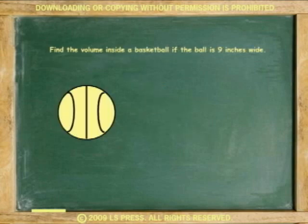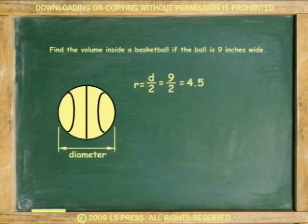Another example, find the volume inside a basketball if the ball is 9 inches wide. In a sphere, width means diameter. Because the radius is needed, divide 9 by 2. The radius is 4.5.